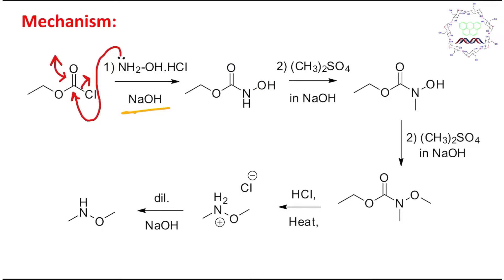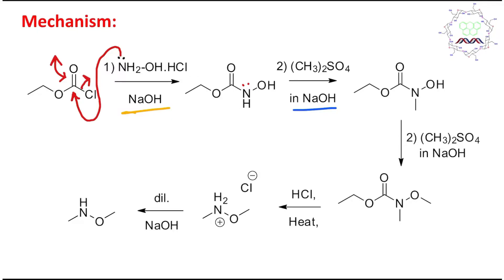The next step is the reaction with dimethyl sulfate, which is an electrophilic reagent. It can transfer two equivalents of methyl groups — two equivalents of methyl electrophile. Dimethyl sulfate is given along with sodium hydroxide. Now, nitrogen is more nucleophilic compared to oxygen. You might think the nitrogen lone pair is in conjugation with the carbonyl, which is true, but this conjugation is not that prominent because there is cross-conjugation as well. So nucleophilicity is obtained from the nitrogen side.